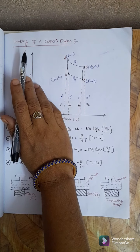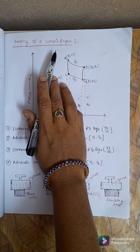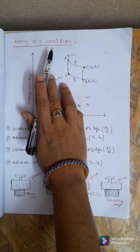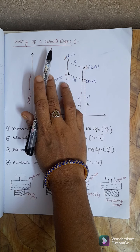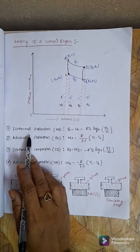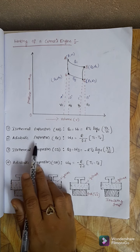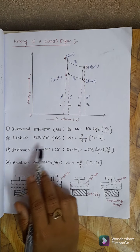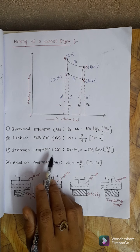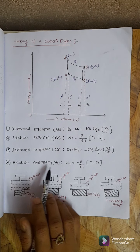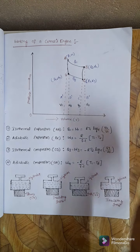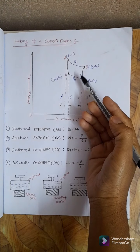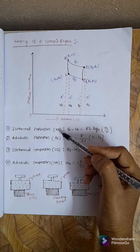Today we are going to discuss the working of a Carnot engine. The Carnot engine undergoes a cyclic operation consisting of four processes: isothermal expansion from A to B, adiabatic expansion from B to C, isothermal compression from C to D, and adiabatic compression from D to A, which are shown in the PV diagram.